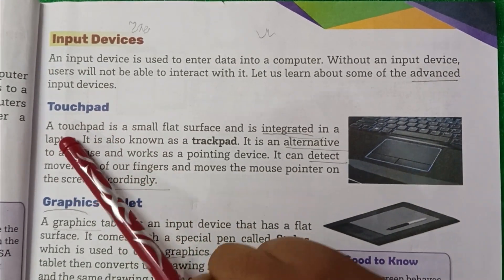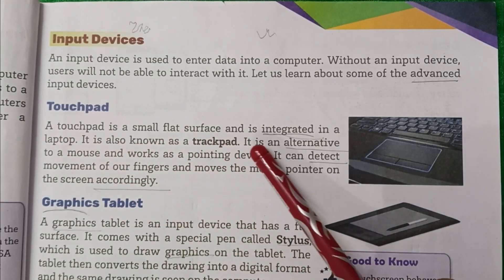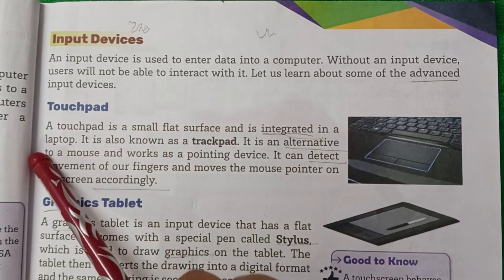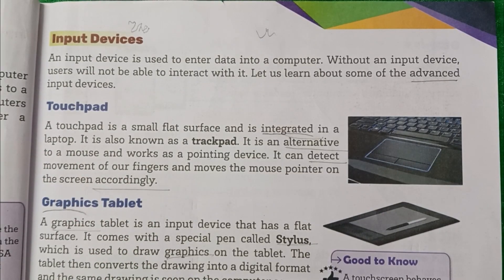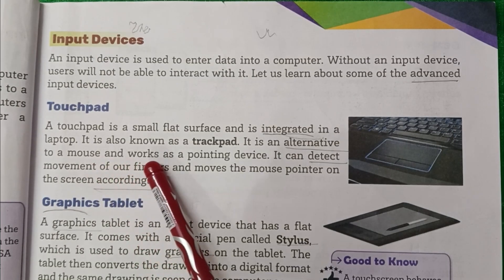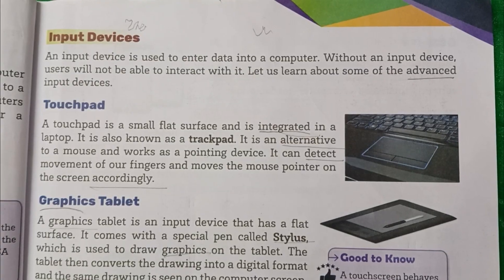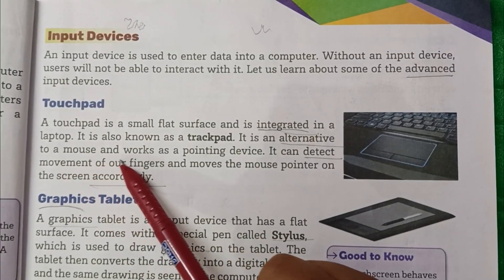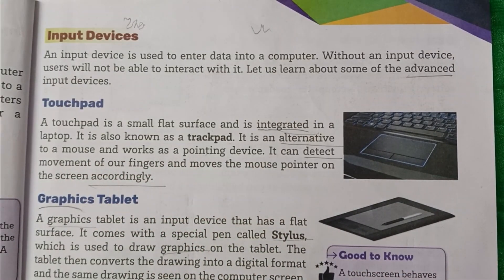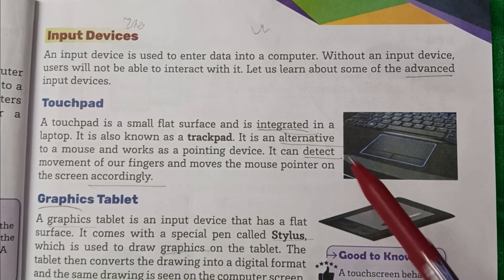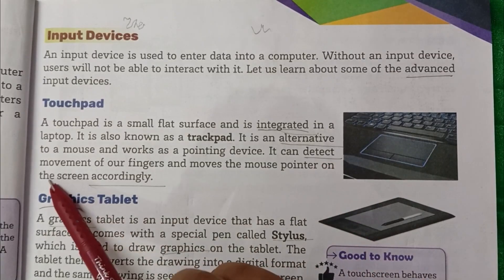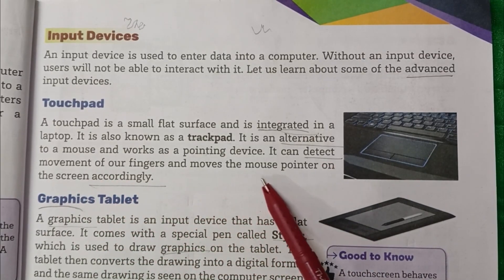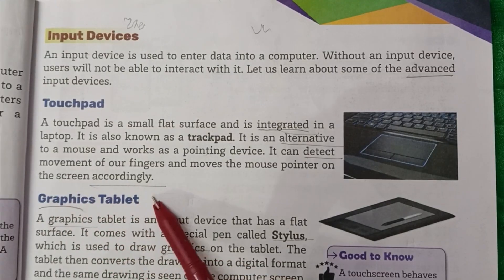Touchpad. A touchpad is a small flat surface and is found in a laptop. Touchpad ek chhota flat surface hota hai jo laptop mein hota hai. It is also known as a trackpad. Ise trackpad bhi kaha jaata hai. It is an alternative to a mouse and works as a pointing device. Touchpad ek mouse ke tarah kaam karta hai, pointing device ke tarah.